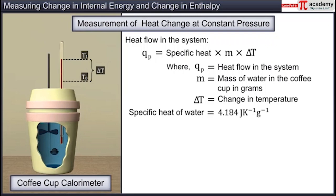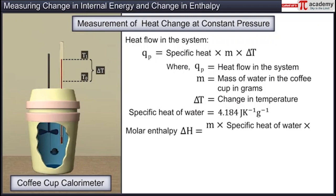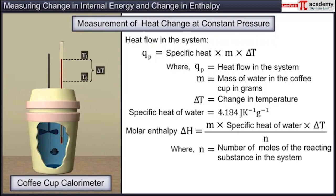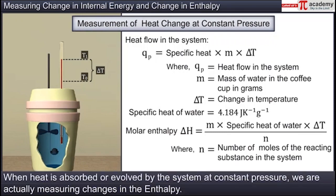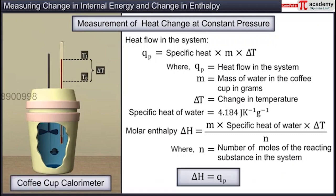The specific heat of water is taken as 4.184 joules per Kelvin per gram. Therefore, the formula for calculating molar enthalpy delta H is: delta H = M × specific heat of water × delta T / N, where N is the number of moles of the reacting substance in the system. It is important to note that when heat is absorbed or evolved by the system at constant pressure, we are actually measuring changes in enthalpy. Therefore, delta H = QP.